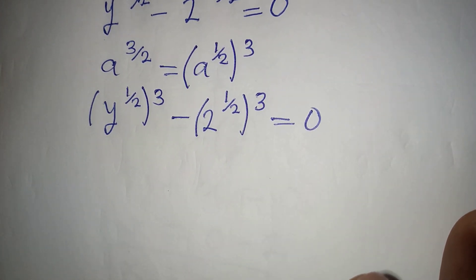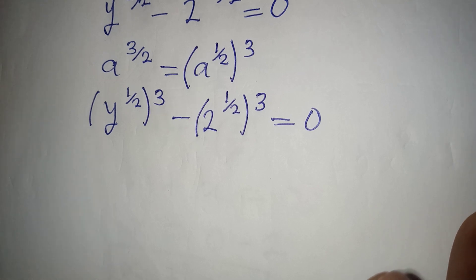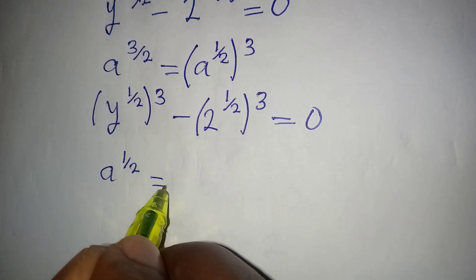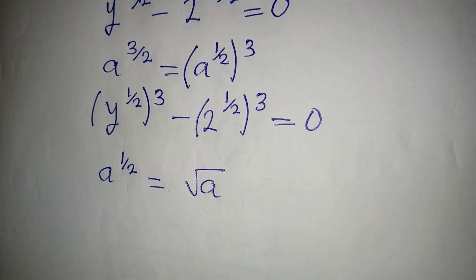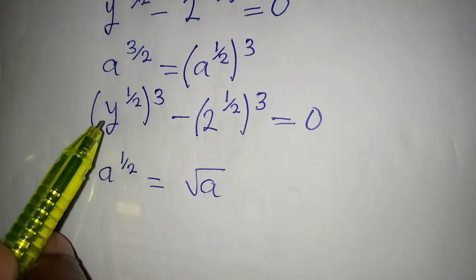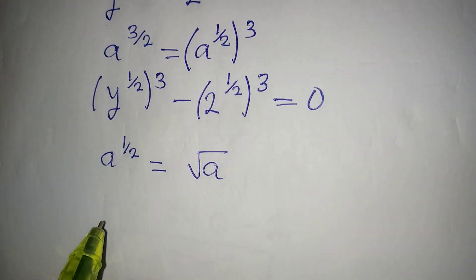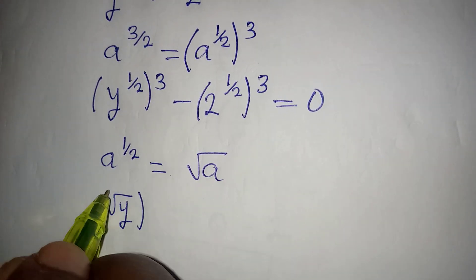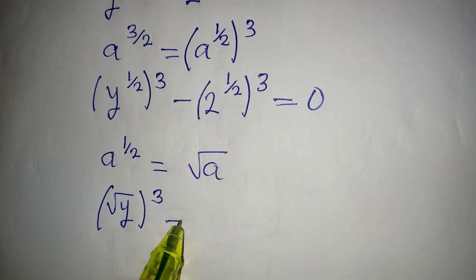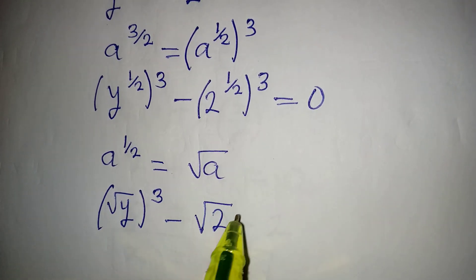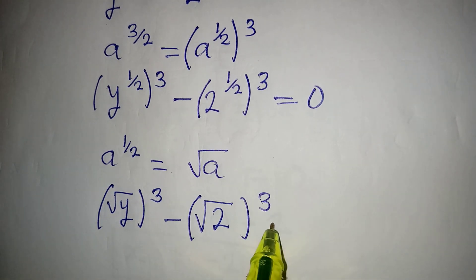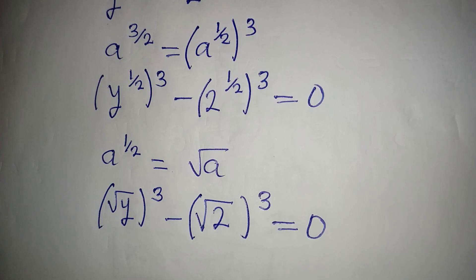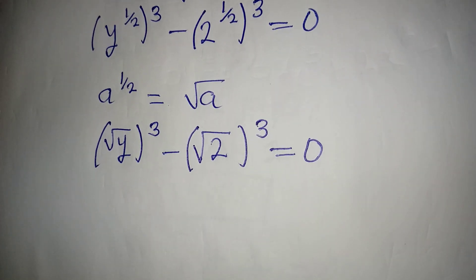Now, a to the power of 1 over 2 is the same thing as the square root of a. Applying this here, we have square root of y, to the power of 3, minus square root of 2, to the power of 3, equal to 0.